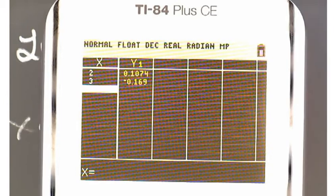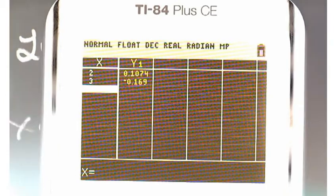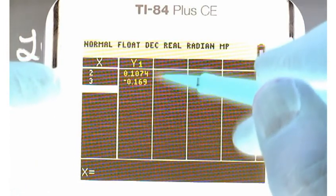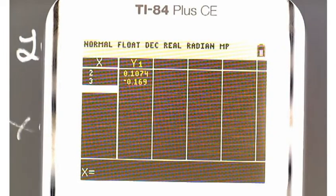And what the intermediate value theorem says is that because it's changing sign, then at some point in between two and three, you have to have a zero. And that's what we found is that point between there that gives us a zero for the function.